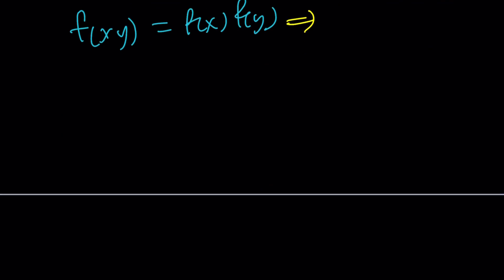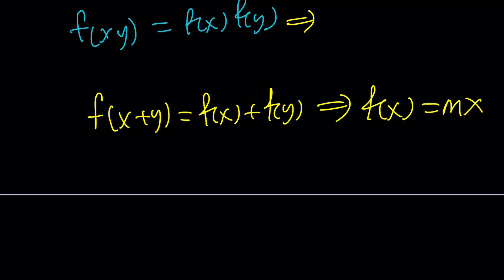So if f of x plus y equals f of x plus f of y and f is continuous, then we have a solution f of x equals mx where m is a constant. Can it be 0? Yeah, I think so.